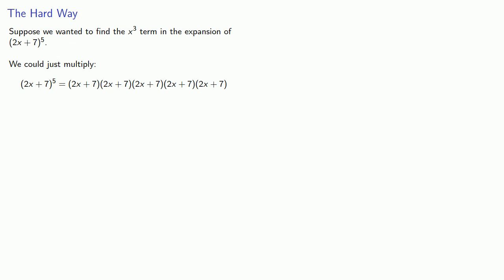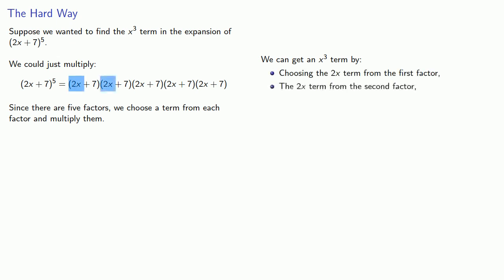What about our menu choices? Since there are five factors, we choose a term from each factor and multiply them together. So if I want an x cubed term, maybe I'll choose the 2x term for the first factor, the 2x term for the second factor, the 2x term for the third factor.